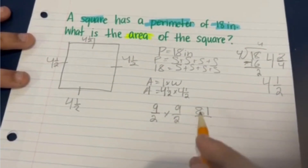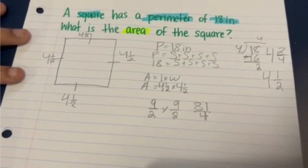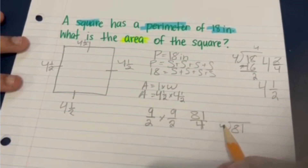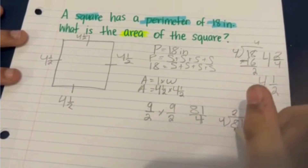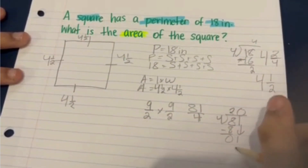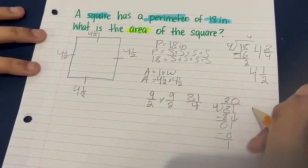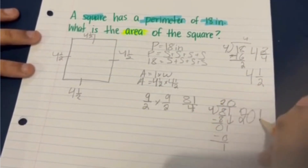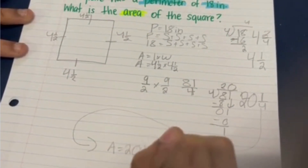To do fraction multiplication, we multiply numerator times numerator and denominator times denominator: nine times nine is 81, and two times two is four. Finally, to find our answer we turn this back into a mixed number by dividing 81 by 4. Four goes into 81 twenty times with a remainder of 1, giving us 20 and one fourth. So our final answer is: area equals 20 and one fourth inches squared.